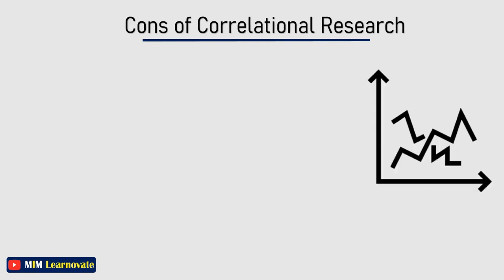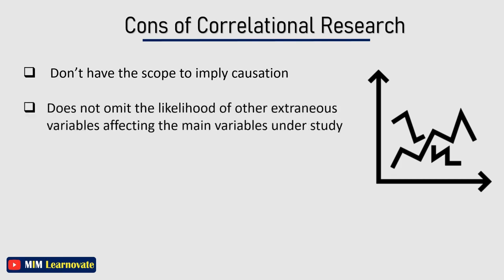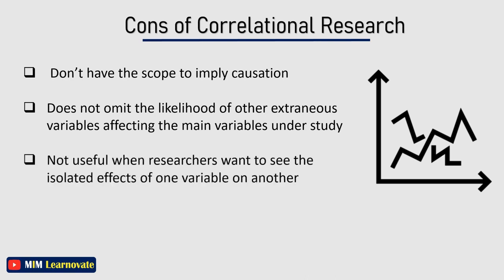The cons of using Correlational Research are that correlational methods don't have the scope to imply causation — they only give information about the association between two variables. Correlational design does not eliminate the likelihood of other extraneous variables affecting the main variable under study. Additionally, correlational methods are not useful when researchers want to see the isolated effects of one variable on another.